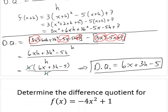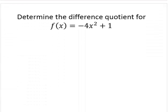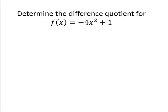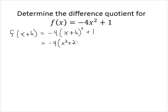Let's see another example. f(x) = -4x² + 1. We're asked to determine the difference quotient, so let's first find the function evaluated at x+h. That would be -4(x+h)² + 1, which is -4(x² + 2xh + h²) + 1, giving -4x² - 8xh - 4h² + 1.